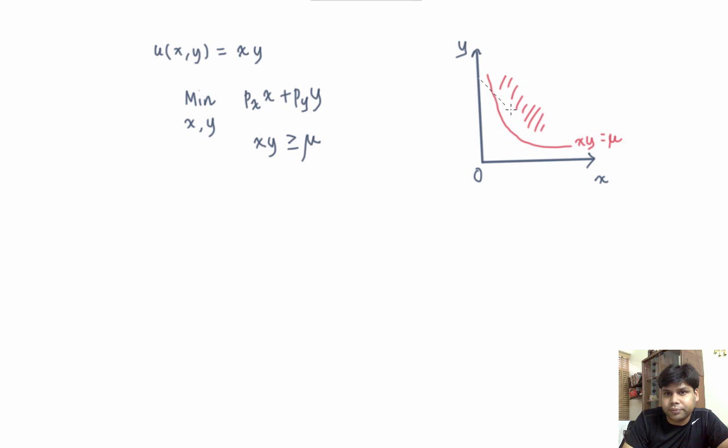So let's do it. This is one example of an iso-expenditure curve, and the slope of this iso-expenditure curve is px by py. Now clearly, this cannot be the solution to the expenditure minimization problem because there is a lot of scope to reduce the expenditure if the individual moves in this direction. So let's make another iso-expenditure curve here.